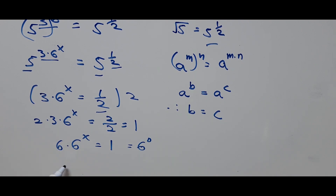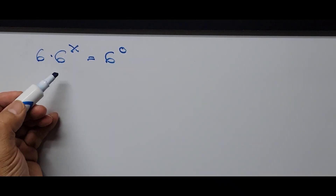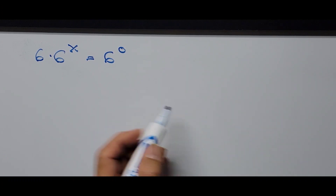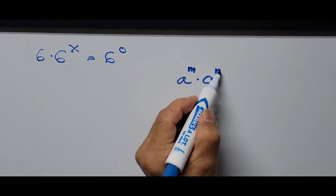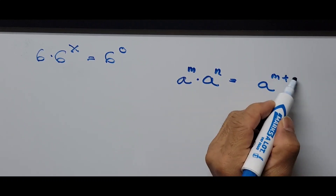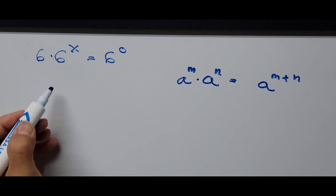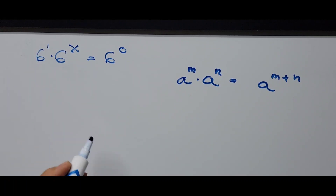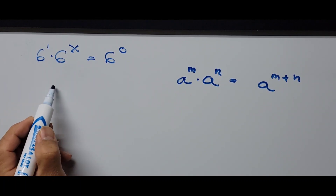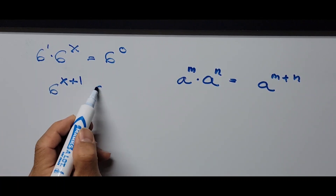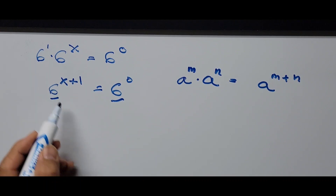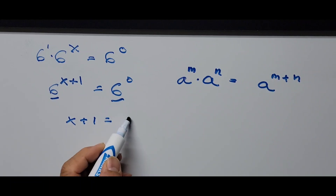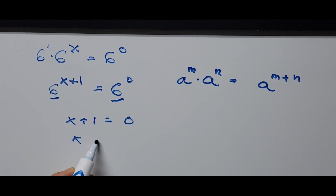So the equation is now 6 times 6 to the power of x equals 6 to the power of 0. Focusing on the left side, we use another rule of exponents: a raised to m times a raised to n equals a raised to m plus n. The 6 on the left is considered 6 to the power of 1, so the left side becomes 6 to the power of x plus 1, equals 6 to the power of 0. Since they have the same base, we equate the exponents: x plus 1 equals 0, therefore x equals negative 1.